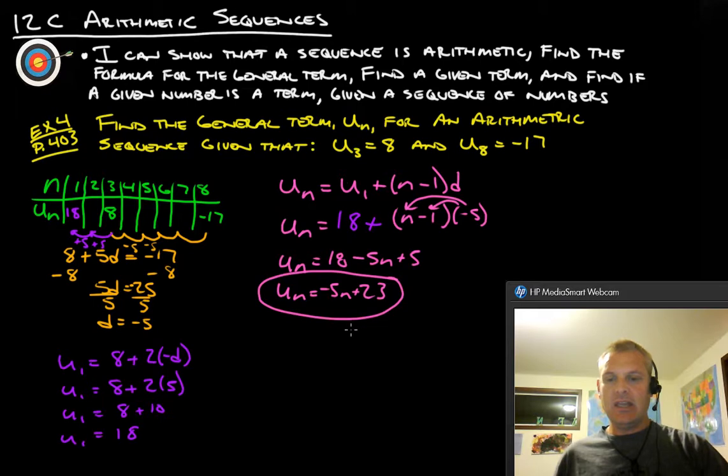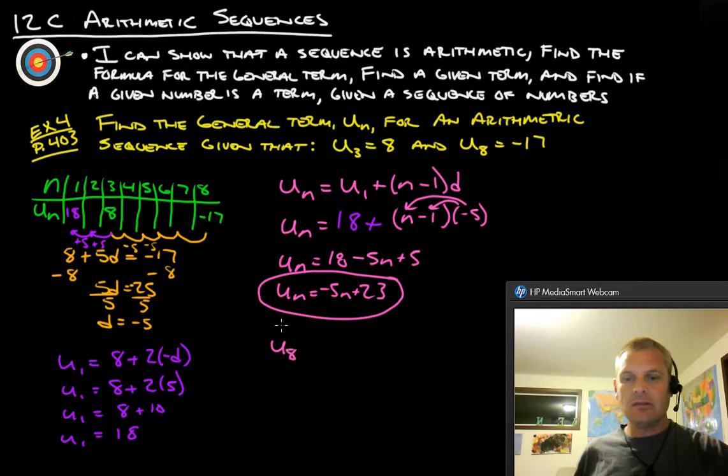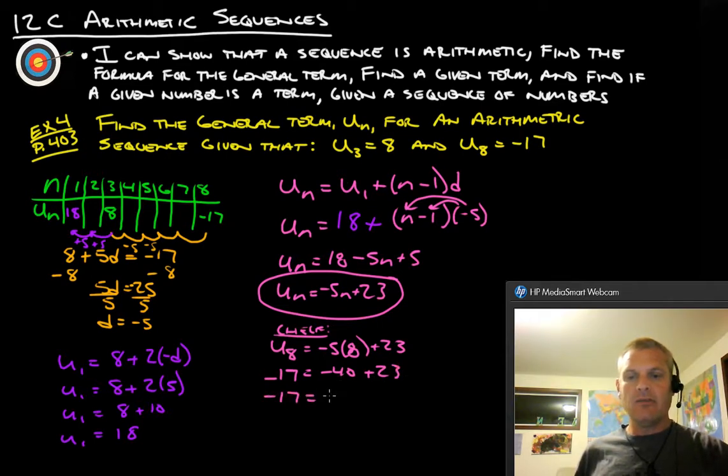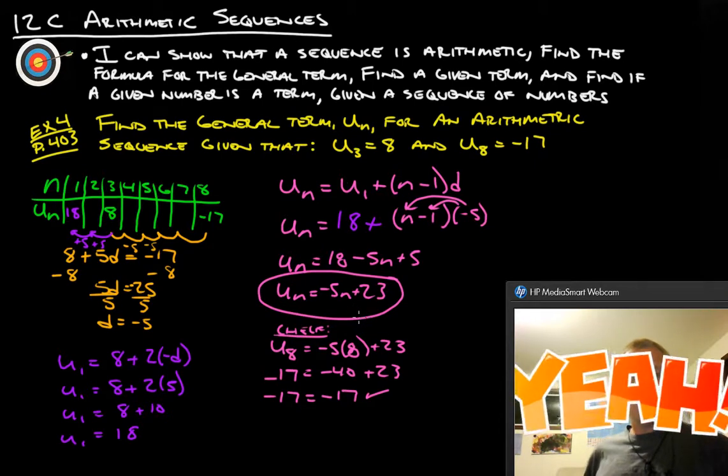It doesn't hurt to double check, so let's just try it out. So u_8, here's our check just to make sure that we got it right. u_8 is negative 5 times 8 plus 23, and our 8th term is negative 17. Negative 5 times 8 is negative 40, and then we're going to add 23 to that, and negative 40 plus 23 gives us negative 17. So we know that this is correct. So yay, we're all done, we got this all figured out.